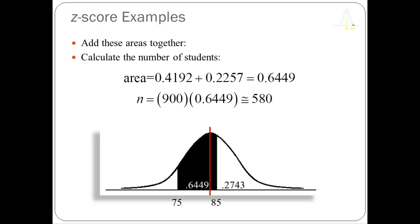This is an addition problem because the mean of the distribution lies between the two values we're interested in — 82 lies between 75 and 85.